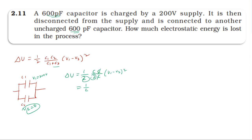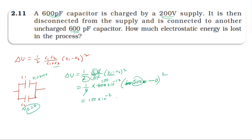Simplifying further: one half times one half gives one quarter. So loss in energy equals one-quarter into C1, where C1 equals 600 picofarad. Substituting: (1/4) into 600 into 10 power minus 12, into 200 whole square, which is 4 into 10 power 4. This gives 150 into 10 power minus 12 into 4 into 10 power 4.